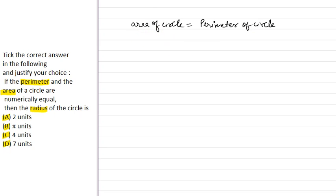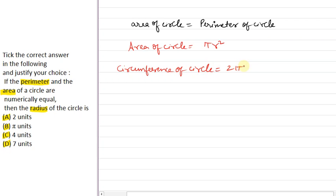First of all, let's see what is the area of circle and what is the perimeter of the circle. Area of circle is πr², and perimeter of circle, which we call circumference of circle, is 2πr. Here the radius is the same, so this means πr² equals 2πr.